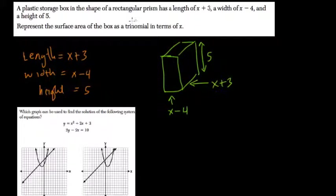They want to know what the surface area would be, and they want you to represent it as a trinomial in terms of x. A trinomial means three terms, so they want this to be essentially a quadratic. To find surface area, we find the area of each face and then add them all up.